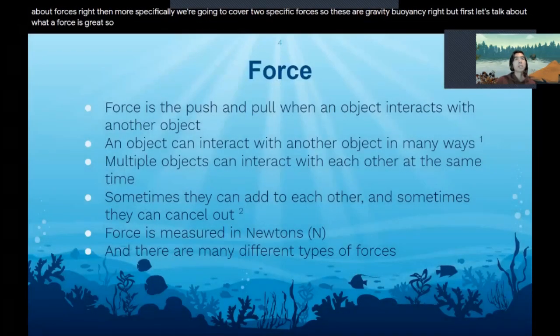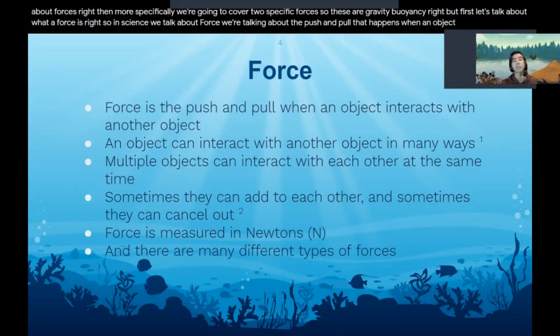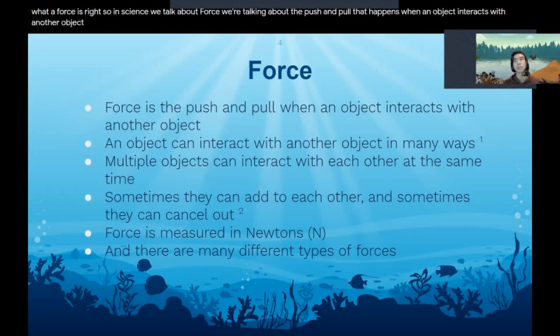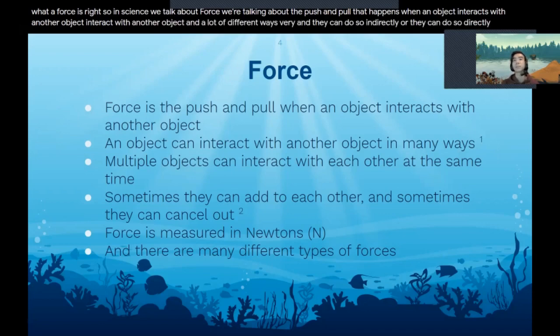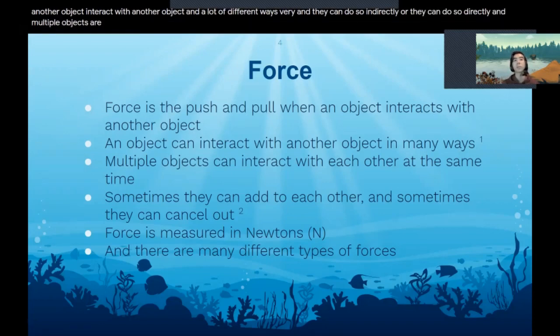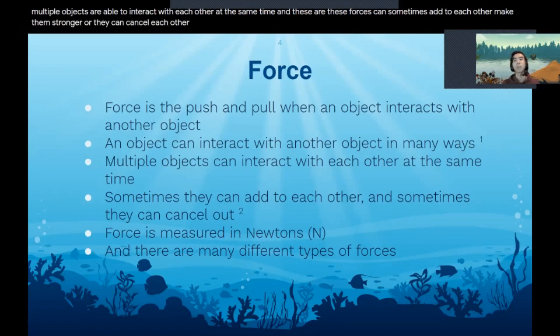In science when we talk about force we're talking about the push and pull that happens when an object interacts with another object. An object is able to interact with another object in a lot of different ways, indirectly or directly. Multiple objects are able to interact with each other at the same time, and these forces can sometimes add to each other and make them stronger or they can cancel each other or make them weaker.